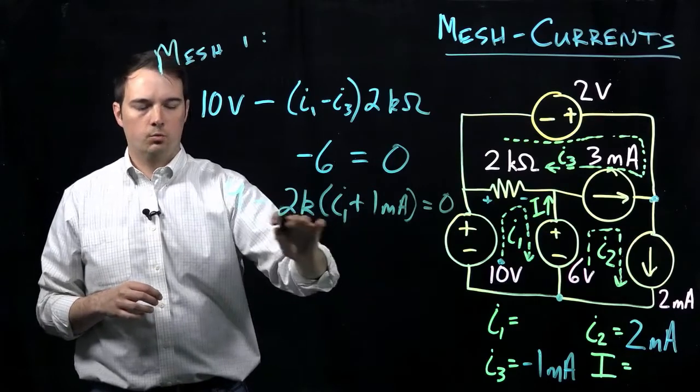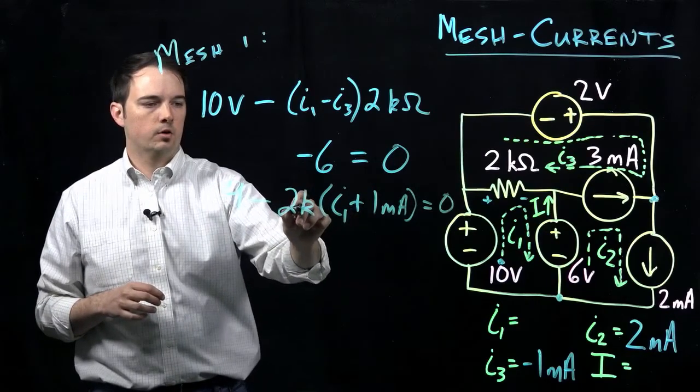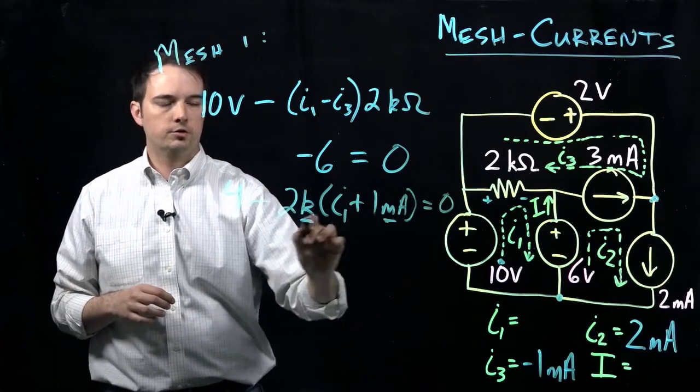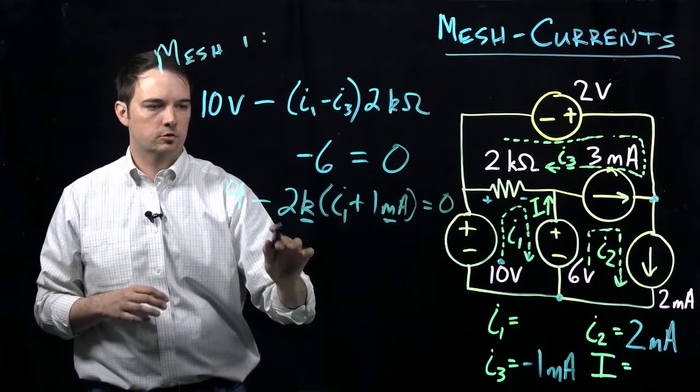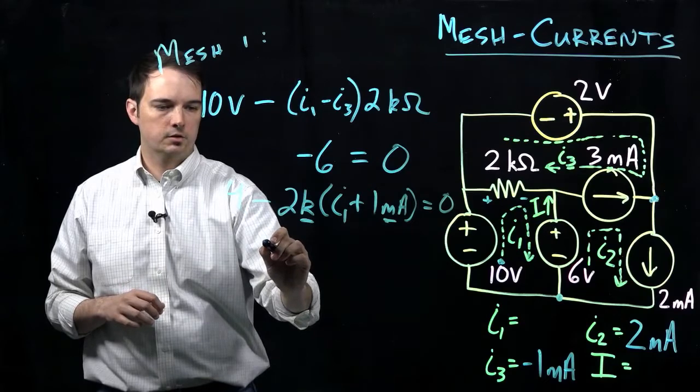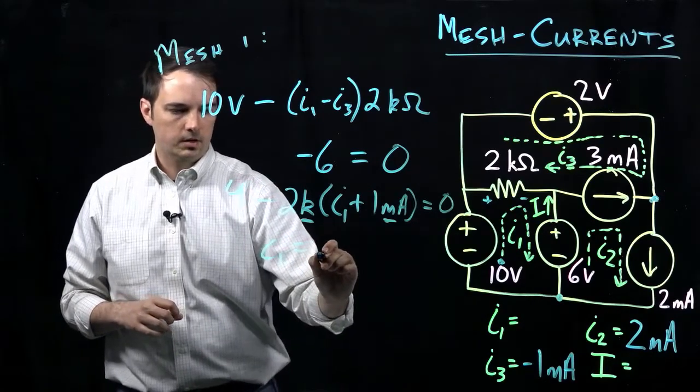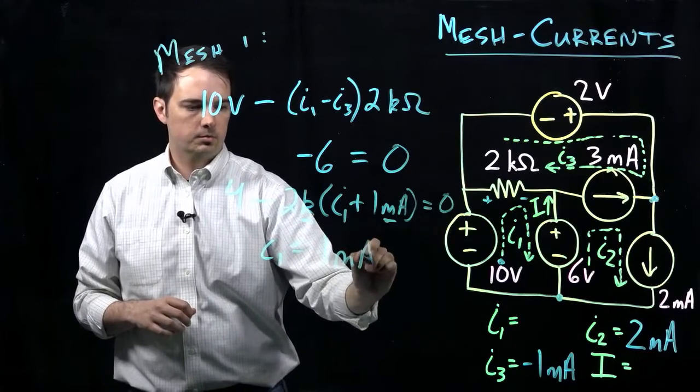Pay attention as you're working out from here - remember that we're always interested in these prefixes. Kiloohm and milliamp are going to modify those particular values, so just be sure you're consistent. Ultimately we should get down to a value of I1 being equal to 1 milliamp.